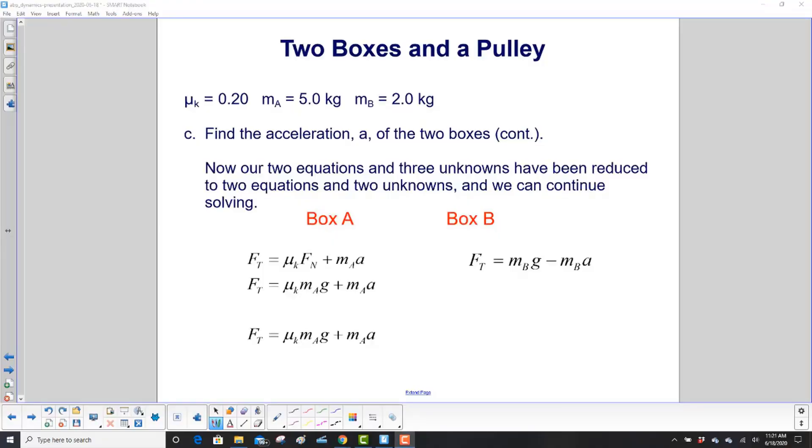Finally, our two equations and three unknowns have been reduced to two equations and two unknowns, and we can continue solving the problem. So from the previous slide, we had box A was mu k times normal plus M A times acceleration.